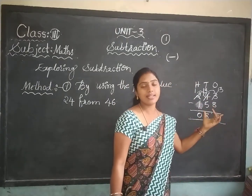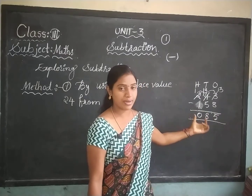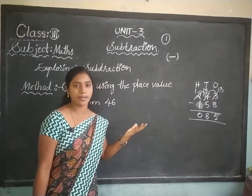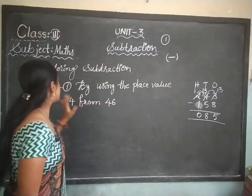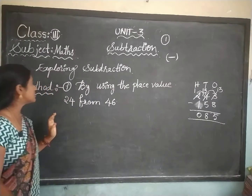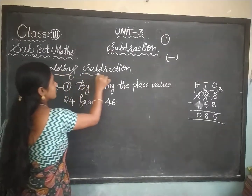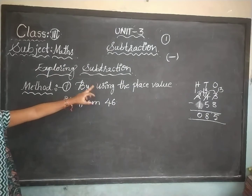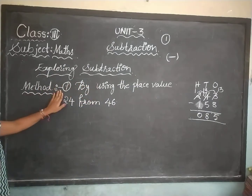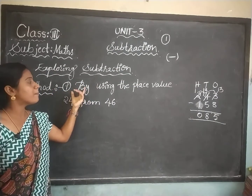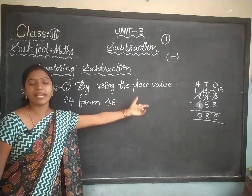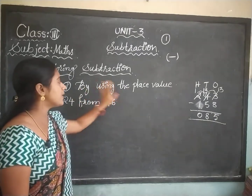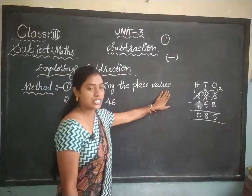In the previous class we did subtraction like this. Now we are going to method-wise — exploring subtraction. What are the methods? Method 1: by using the place value.